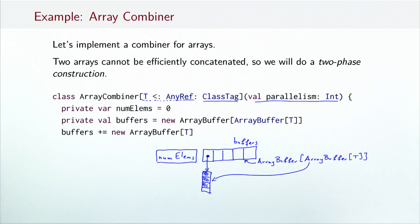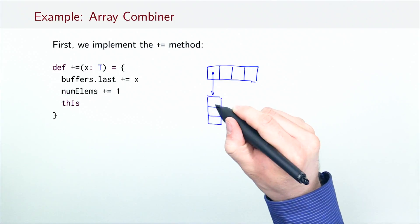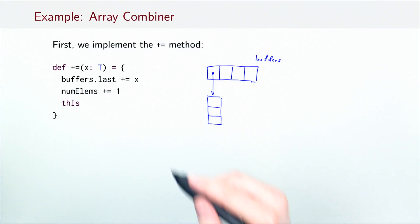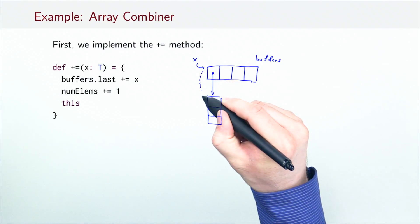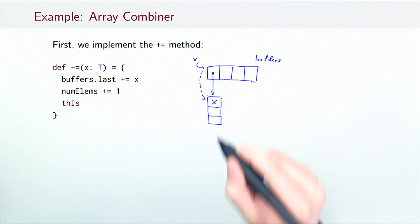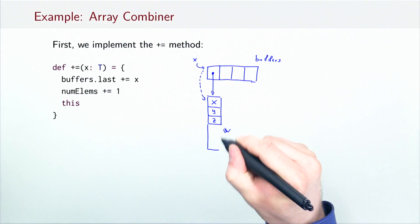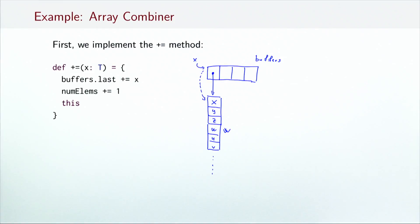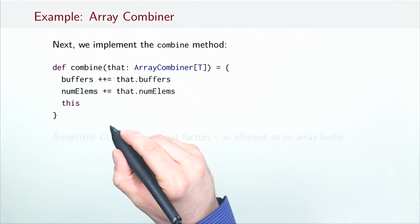We use a nested array buffer instead of a normal one for reasons that should soon become apparent. We start with plus equals. This method finds the last nested array buffer in buffers and appends the element x to it. If the last nested array buffer ever gets full, it is expanded to accommodate more elements. As learned previously, appending to an array buffer takes amortized constant time.